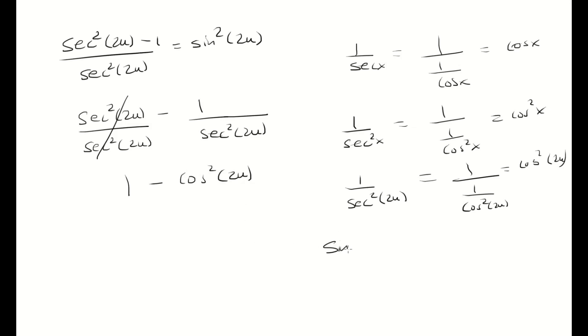The next thing we have to know is that sine squared plus cosine squared is 1. If I let x equal 2u, that means sine squared 2u plus cosine squared 2u is equal to 1.